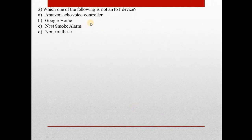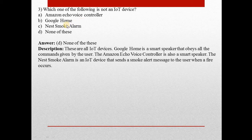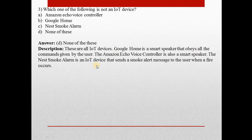Question number three: Which one of the following is not an IoT device? Answer is D — None of the above. All three options are IoT devices: Amazon Echo voice controller, Google Home, and Nest smoke alarm. Google Home is a smart speaker that obeys commands given by the user. The Nest smoke alarm is an IoT device that sends a smoke alert message to the user when a fire occurs.